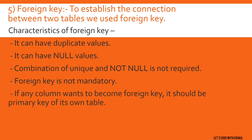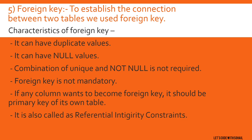If any column wants to become a foreign key, it should be the primary key of its own table. So to stabilize the connection between two tables, each table has a primary key — one column is chosen and declared as primary key. If that column wants to become a foreign key, it must be the primary key of its own table. Foreign key is also called a referential integrity constraint.